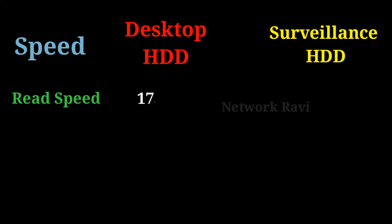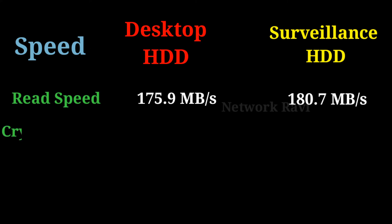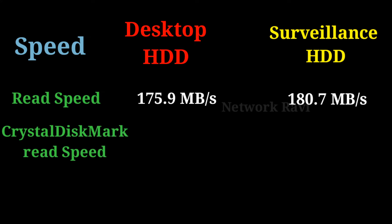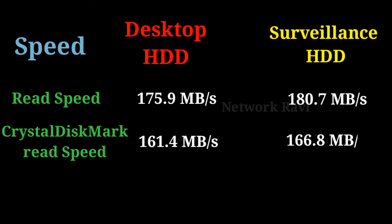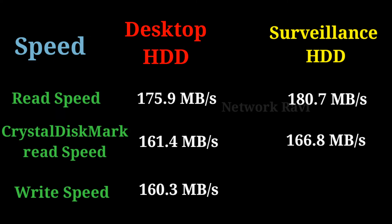This is the read speed. For the surveillance camera hard disk, the read speed is 166.8 Mbps. For the desktop hard disk, the read speed is 161.4 Mbps. For write speed, the desktop hard disk is 163.3 Mbps and the surveillance hard disk is 165.5 Mbps.